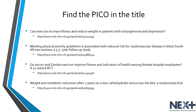Let's practice identifying the different parts of the PICO question. Presented are titles from published research, and inside these titles you can pick out the PICO elements. The first title: Can exercise increase fitness and reduce weight in patients with schizophrenia and depression? The intervention is exercise, there is no comparison group, and the outcome is an increase in fitness and decrease in weight.